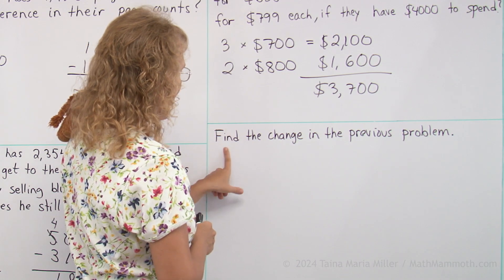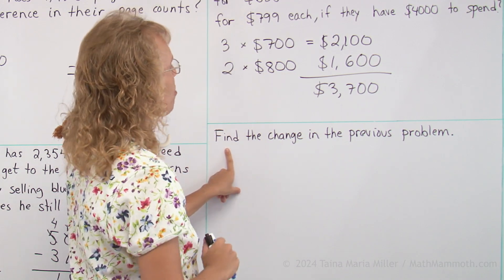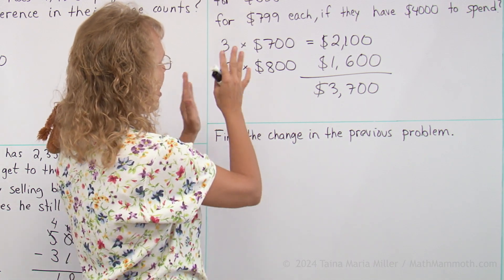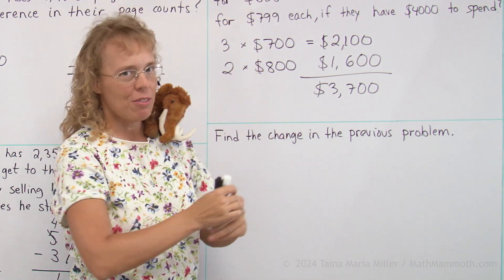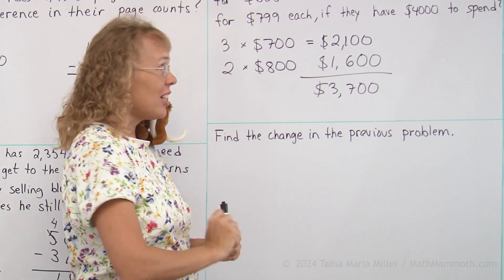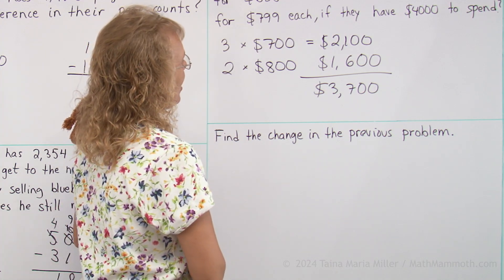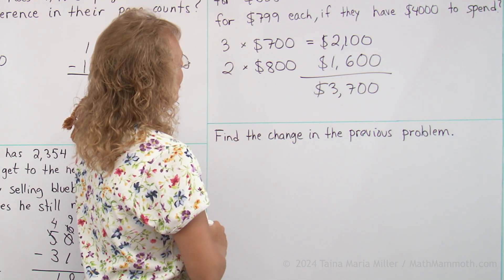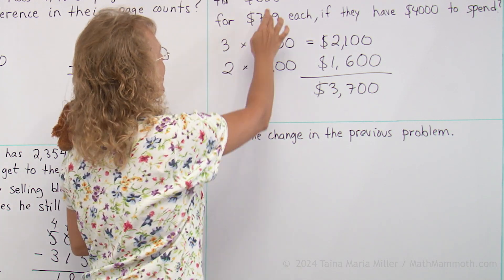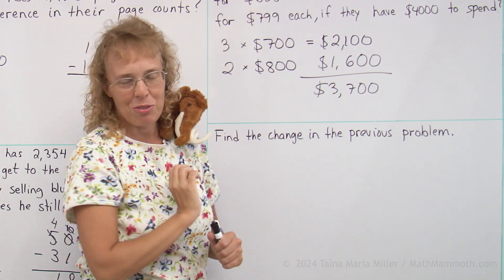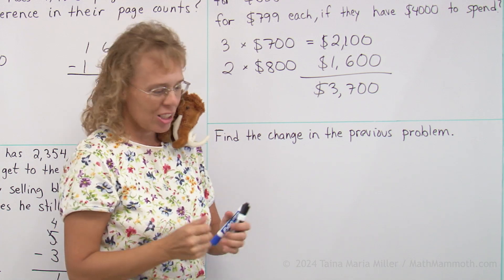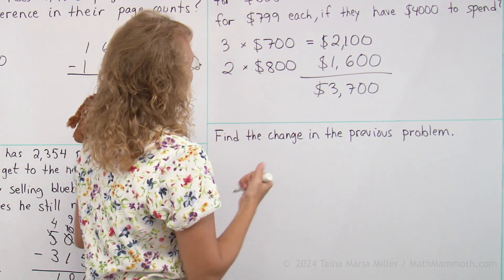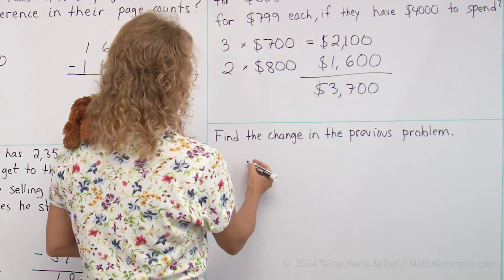Lastly, find the change in the previous problem. If they go and buy all that stuff and pay with $4000, find the change. Now it looks like we will need to add these particular numbers to find the exact cost. Let me show you the adding first.